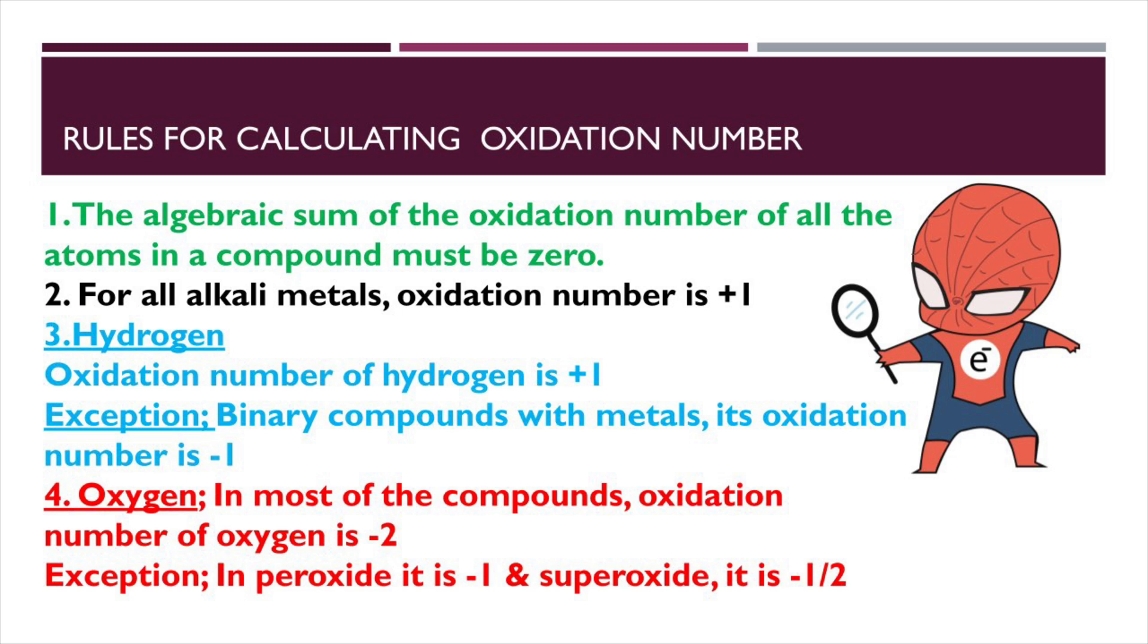To find oxidation number, certain rules are there. We need to follow the rules. According to the rule, algebraic sum of oxidation number of all the atoms in a molecule must be zero. For alkali metals, oxidation number is plus one. For oxygen, except peroxide and superoxide, its oxidation number is minus two.